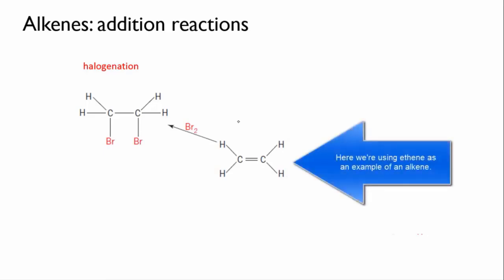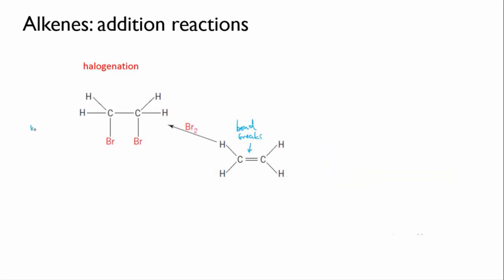In the first one here, one of the two bonds in the carbon-carbon double bond breaks and the two freed up bonds, one on each carbon, join onto halogen atoms from a diatomic halogen molecule. I've shown bromine here but it can happen with any of the halogens, fluorine, chlorine or iodine. This reaction is called halogenation because you're adding halogen atoms to the alkene and this reaction happens fairly easily and at room temperature.